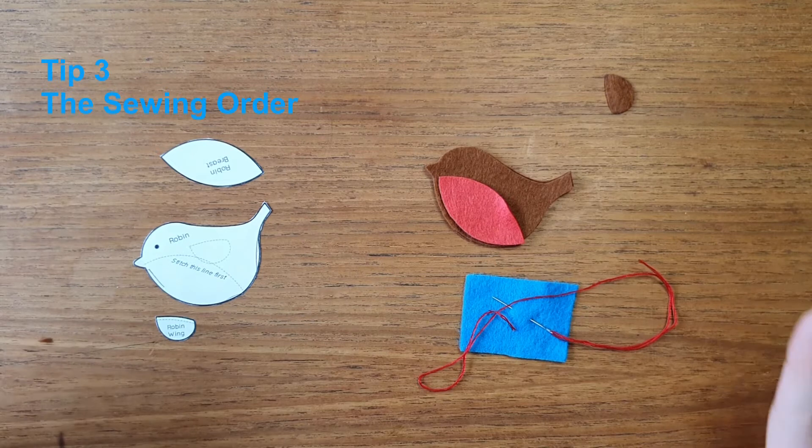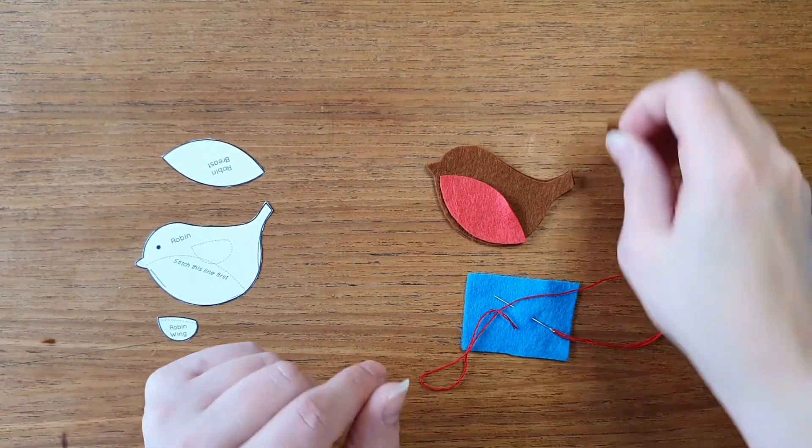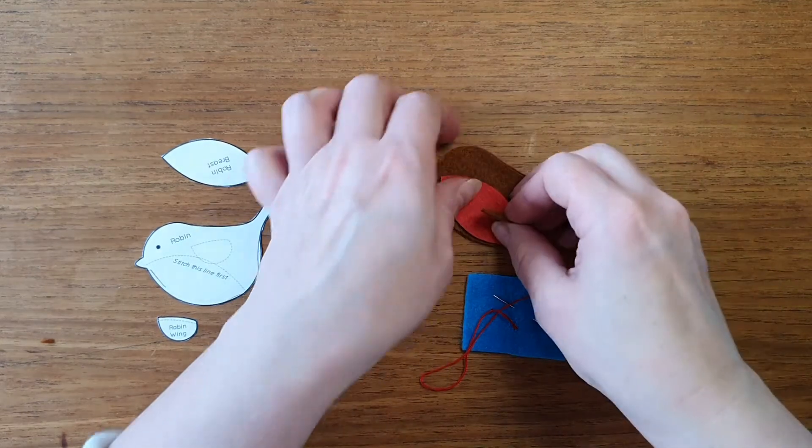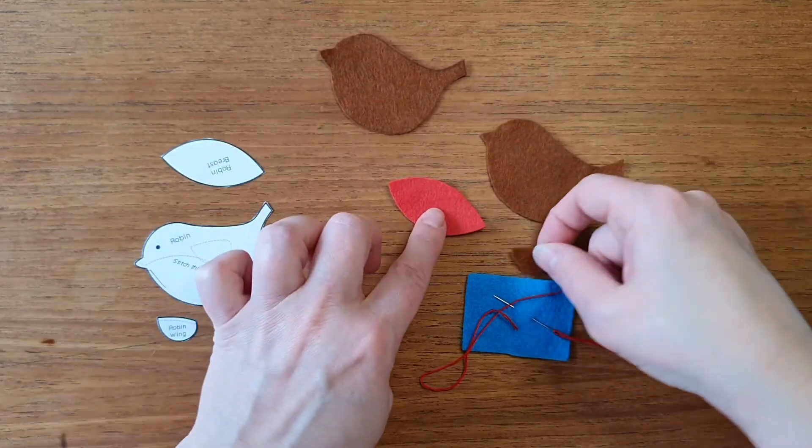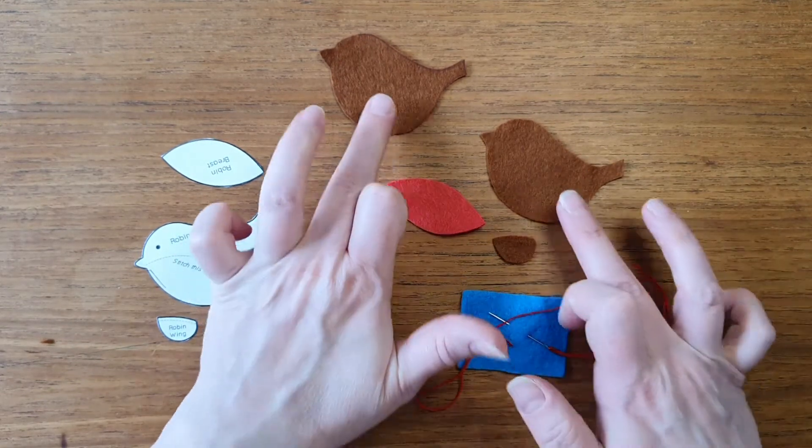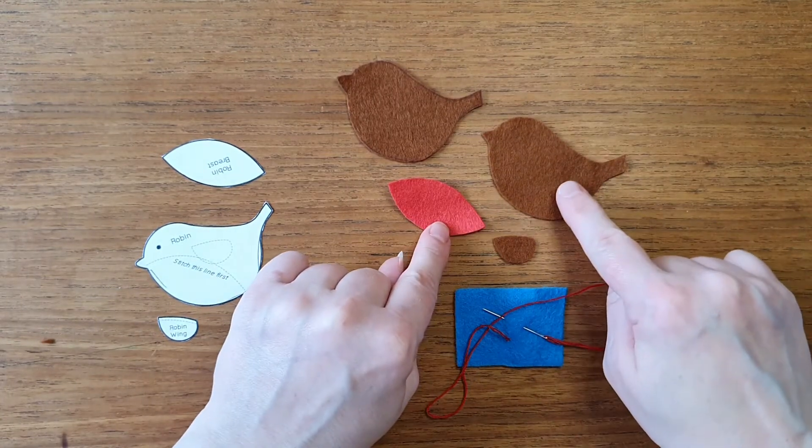Felt brooches and more, tip number three: the sewing order. Here I have all the pieces for the little robin that we cut out earlier. So this is the top layer.